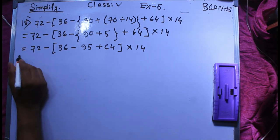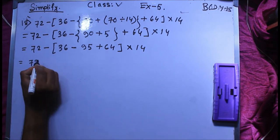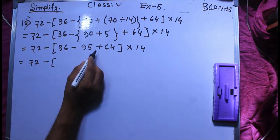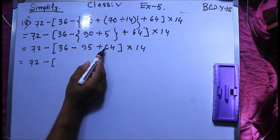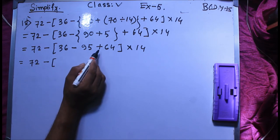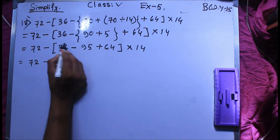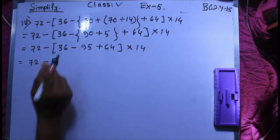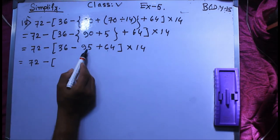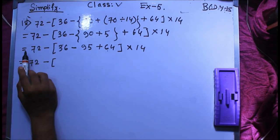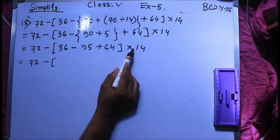We have third bracket 72 minus 36 minus 95. 36 plus 64, so now we have second bracket. Below that we have third bracket, fourth bracket plus 9.